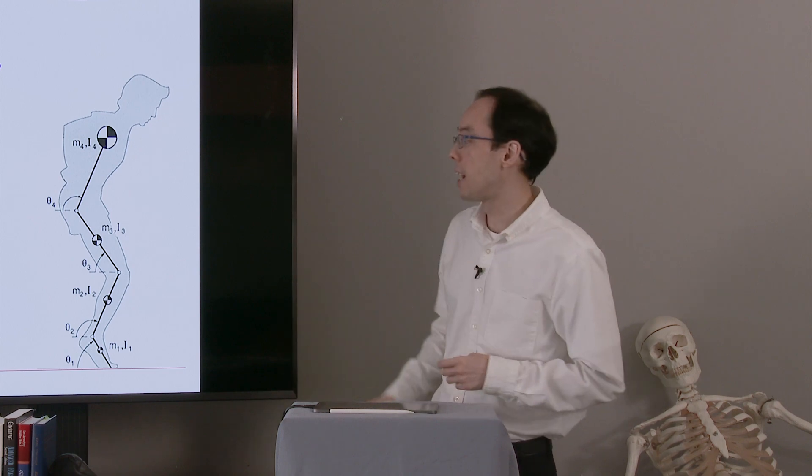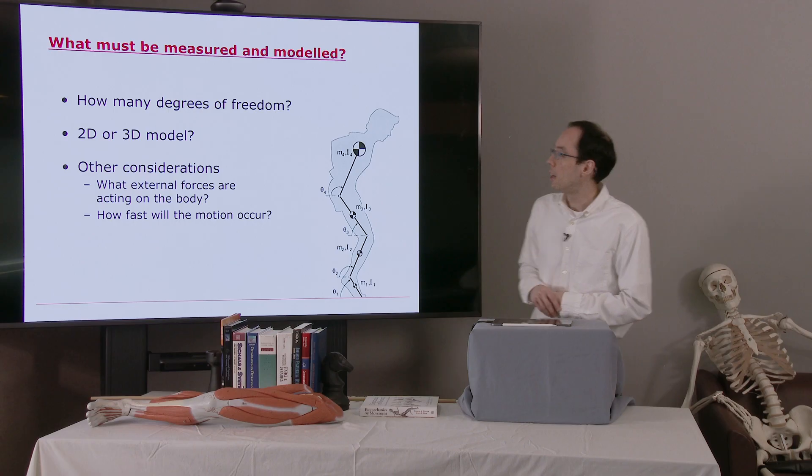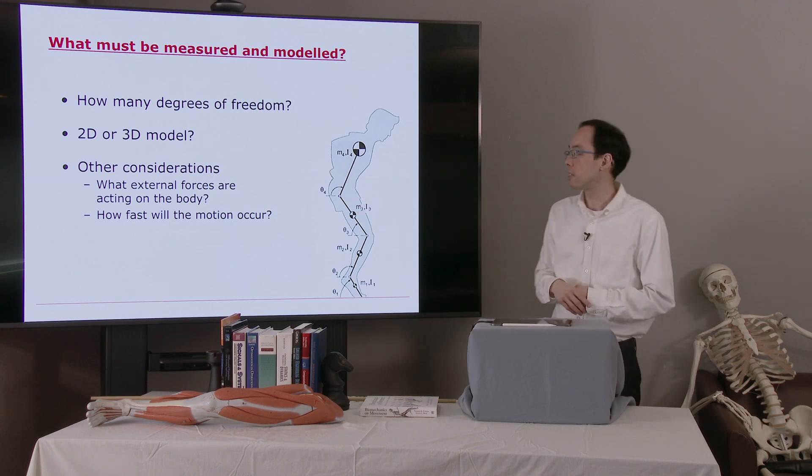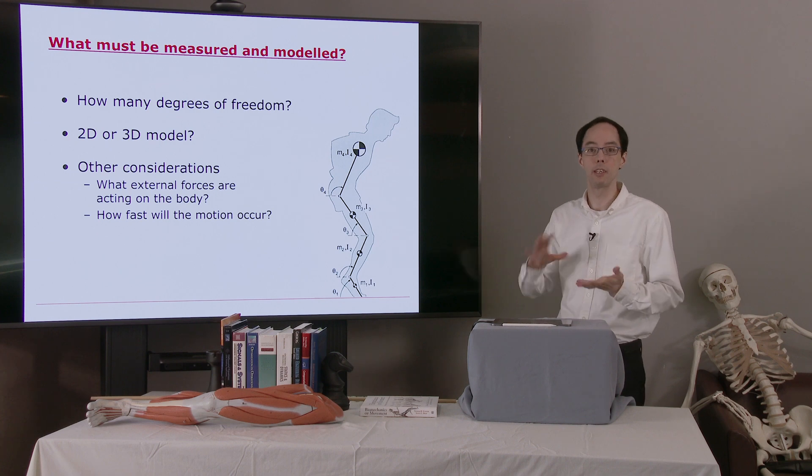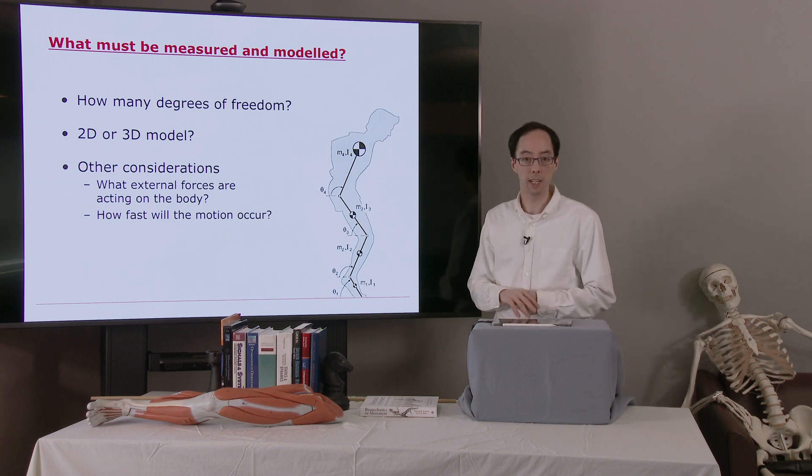If we're looking at reaching, of course we would need arms. Maybe we don't need a lower body in that case. Do we need a 2D or 3D model? Some motions are primarily done in the sagittal plane, or we might just be interested in some sagittal plane dynamics, so a sagittal plane model would suffice in that case.